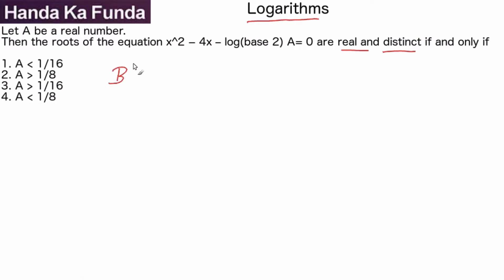Let's see if that is happening here. b is -4, so b² will be 16. Minus 4a, where the coefficient of x² is 1, and c which is the constant term is -log₂(A).